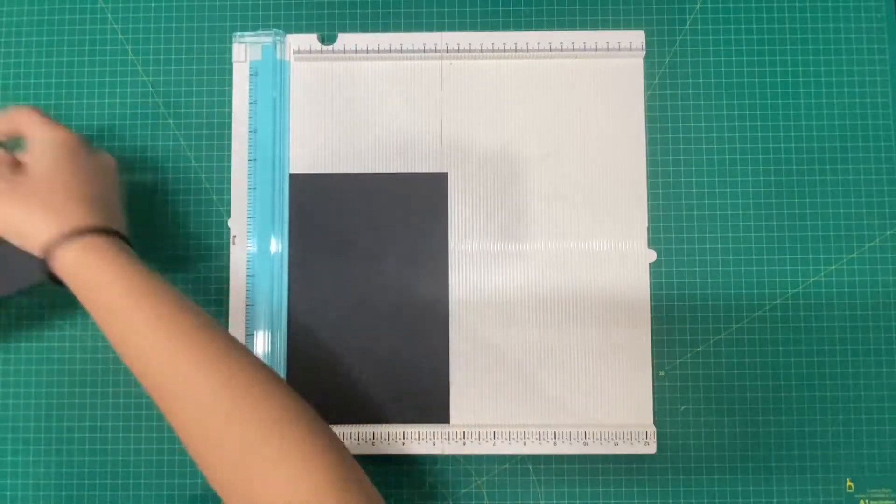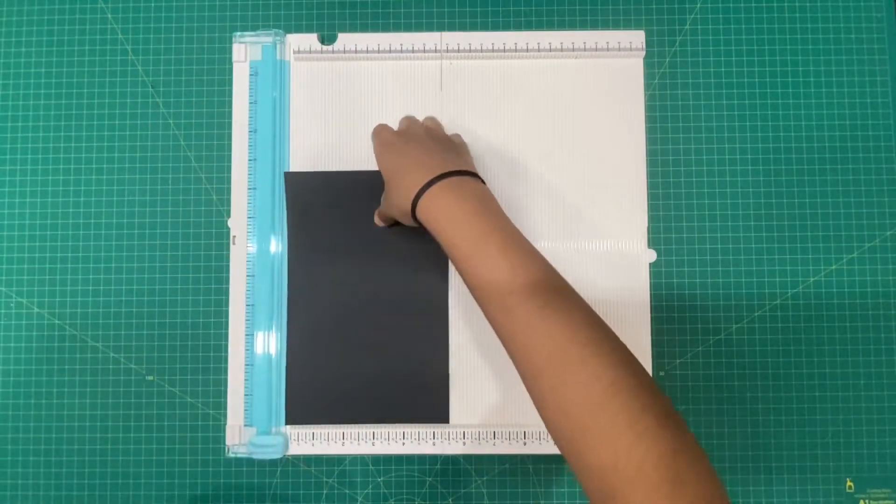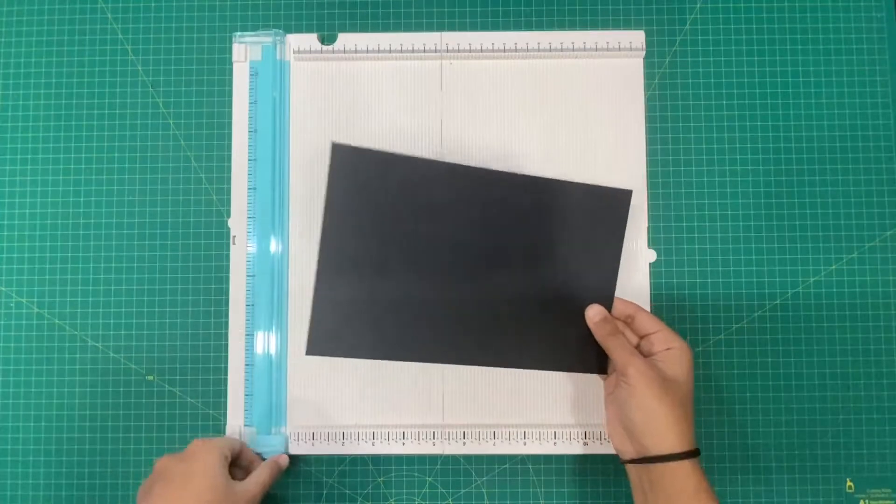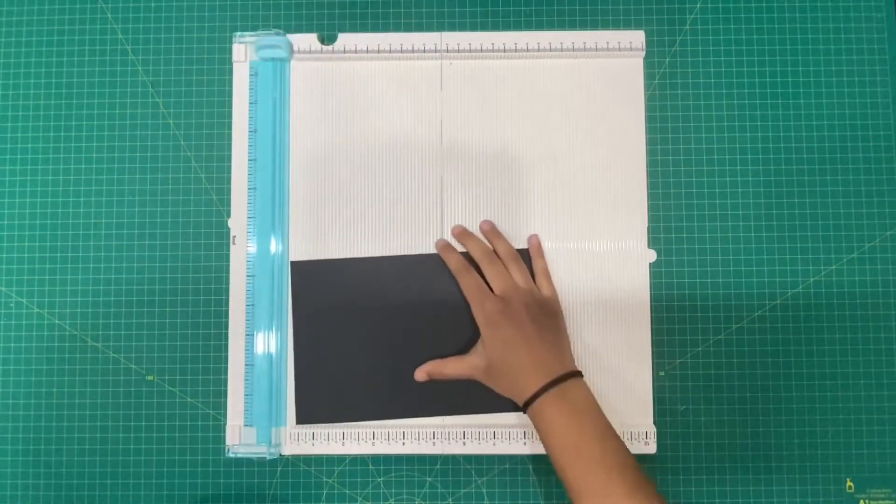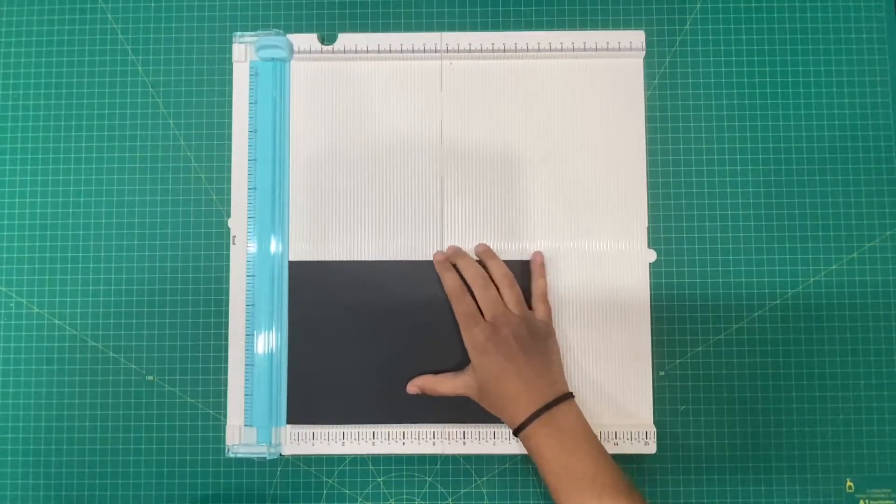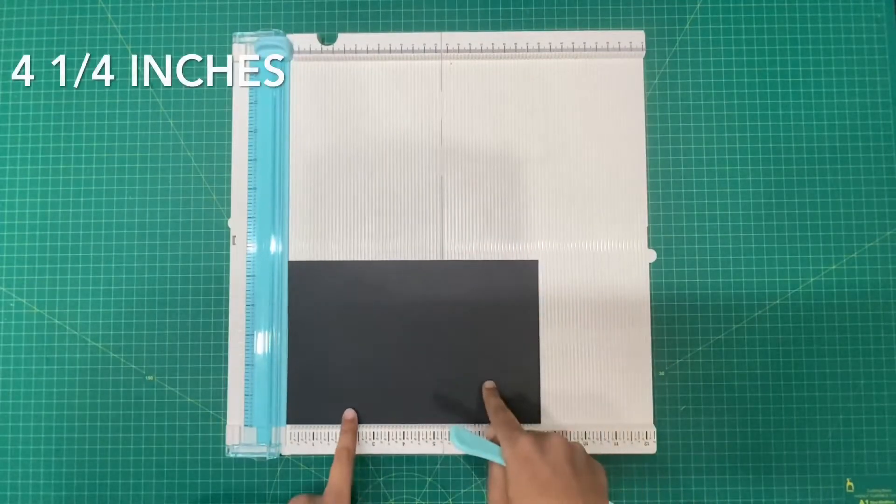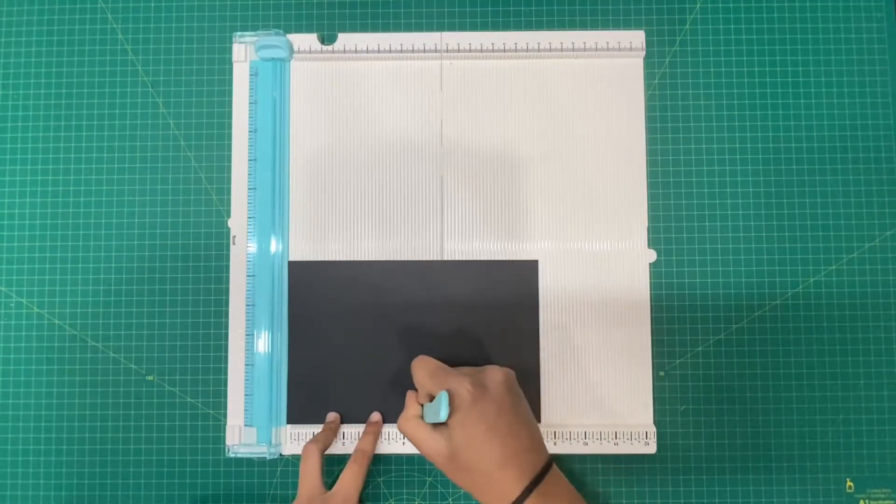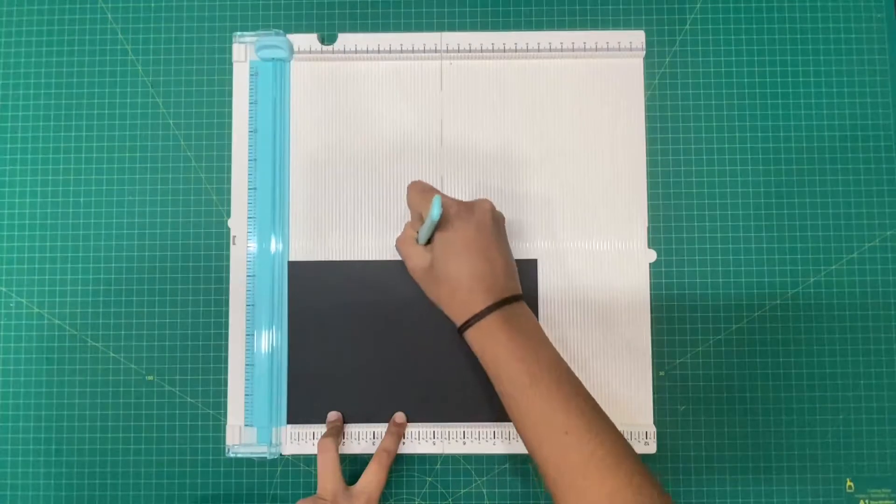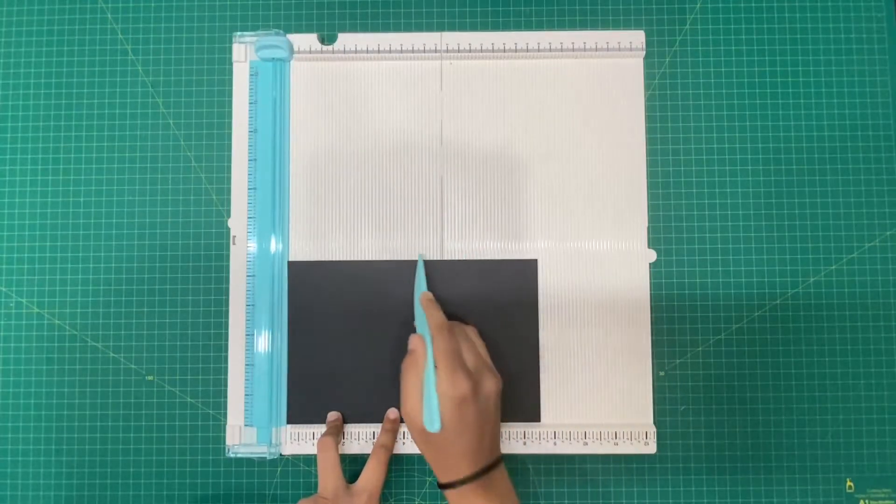You can put this other piece away and we're going to use this cardstock to make our base. First we're going to score a line at four and a quarter inches because it's halfway through our cardstock. I'm going to score a line on my scoreboard like this.